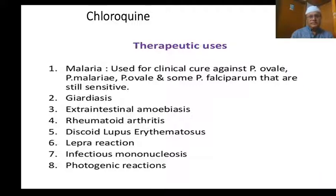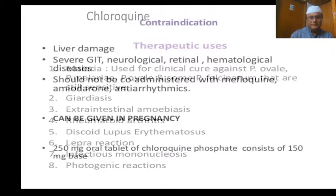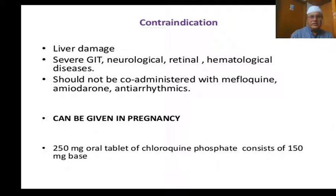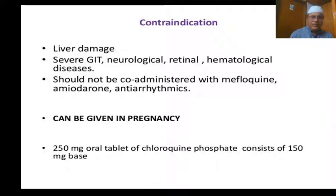Therapeutic uses of chloroquine: treatment of malaria; extra-intestinal amoebiasis — hepatic amoebiasis; rheumatoid arthritis; discoid lupus erythematosus; lepra reaction; infectious mononucleosis. Contraindications: liver dysfunction or liver disease; severe GIT intolerance; neurological, retinal, and haematological diseases. Should not be co-administered with mefloquine, amiodarone, or antiarrhythmic drugs. Chloroquine can be given in pregnancy.